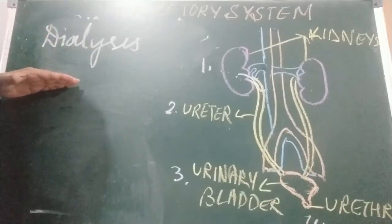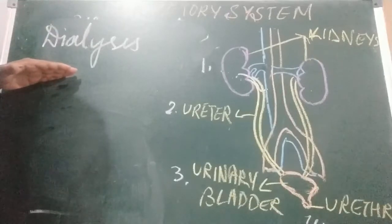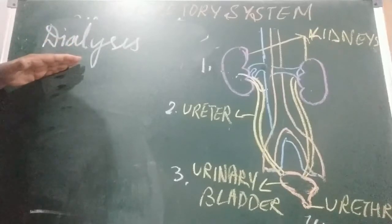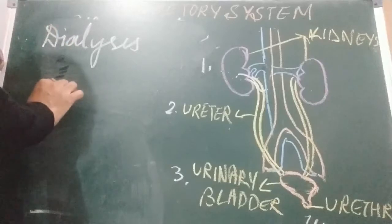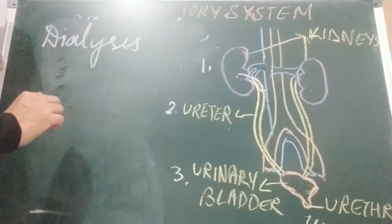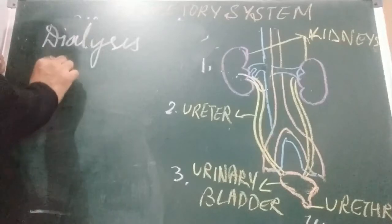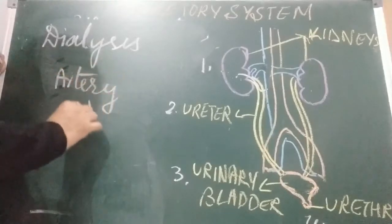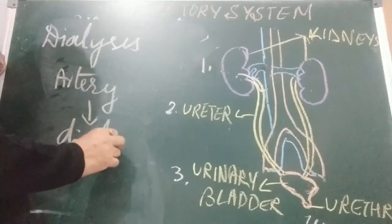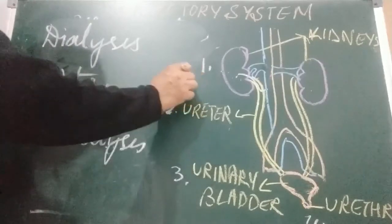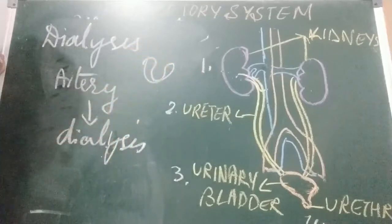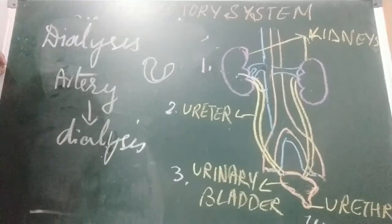The process of cleaning the blood of a person by separating the toxic waste products using a dialysis machine is called dialysis. To perform dialysis, the blood from an artery of the patient's arm is passed through the dialysis machine. The same purification that takes place in the nephron takes place in the dialysis machine, and the waste products are removed from the blood.